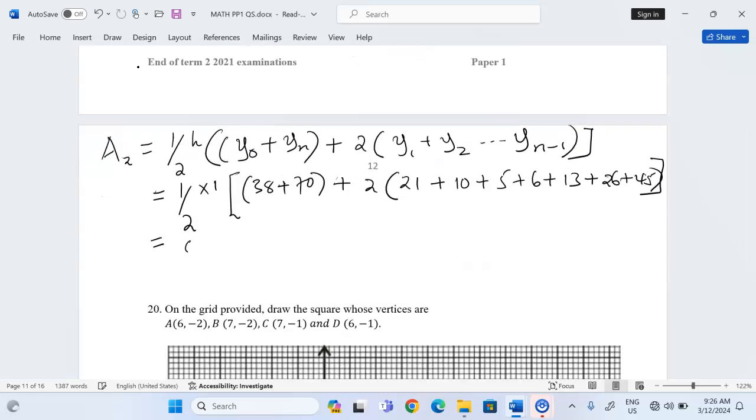Half multiplied by 1 will be still half 0.5. This will be 108 plus 2 multiplied by everything there, 252. Therefore, you will get 0.5 by 360 and this will give us exactly 180 square units.